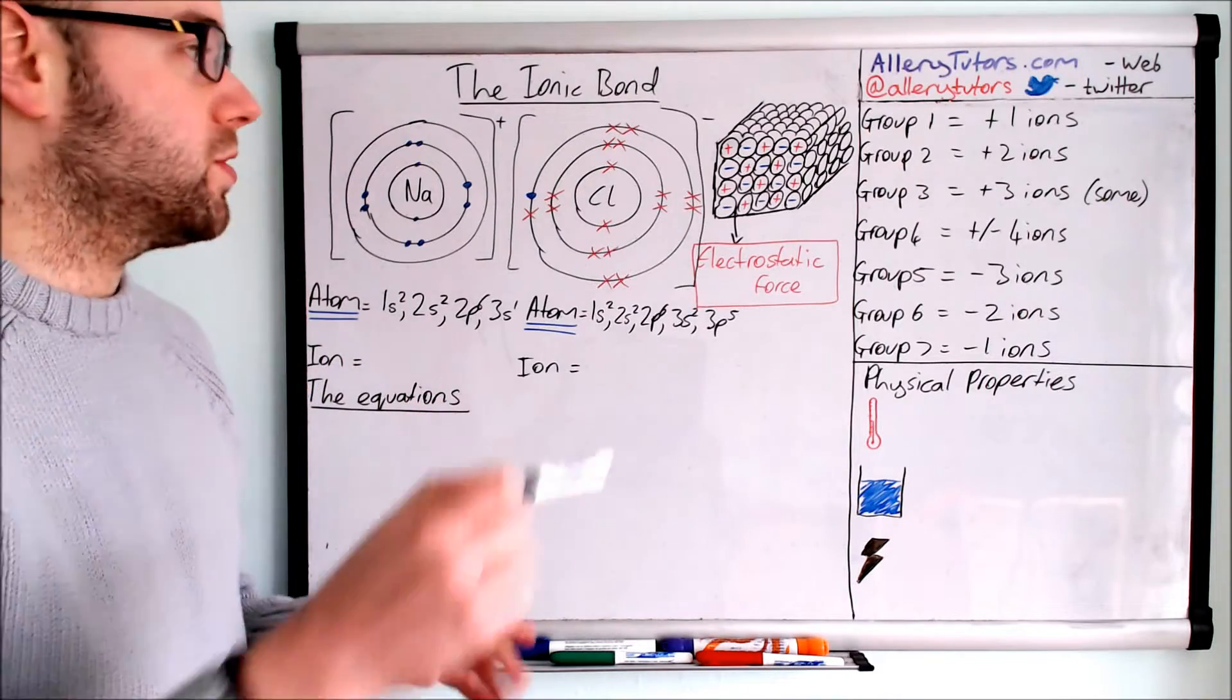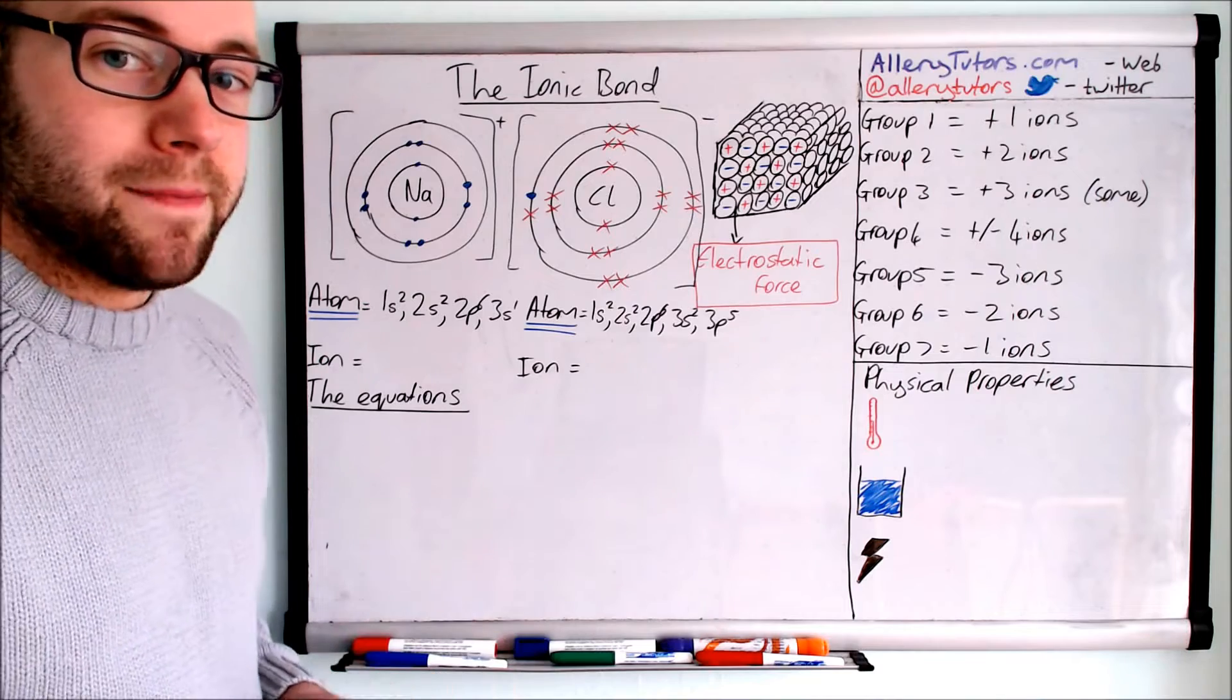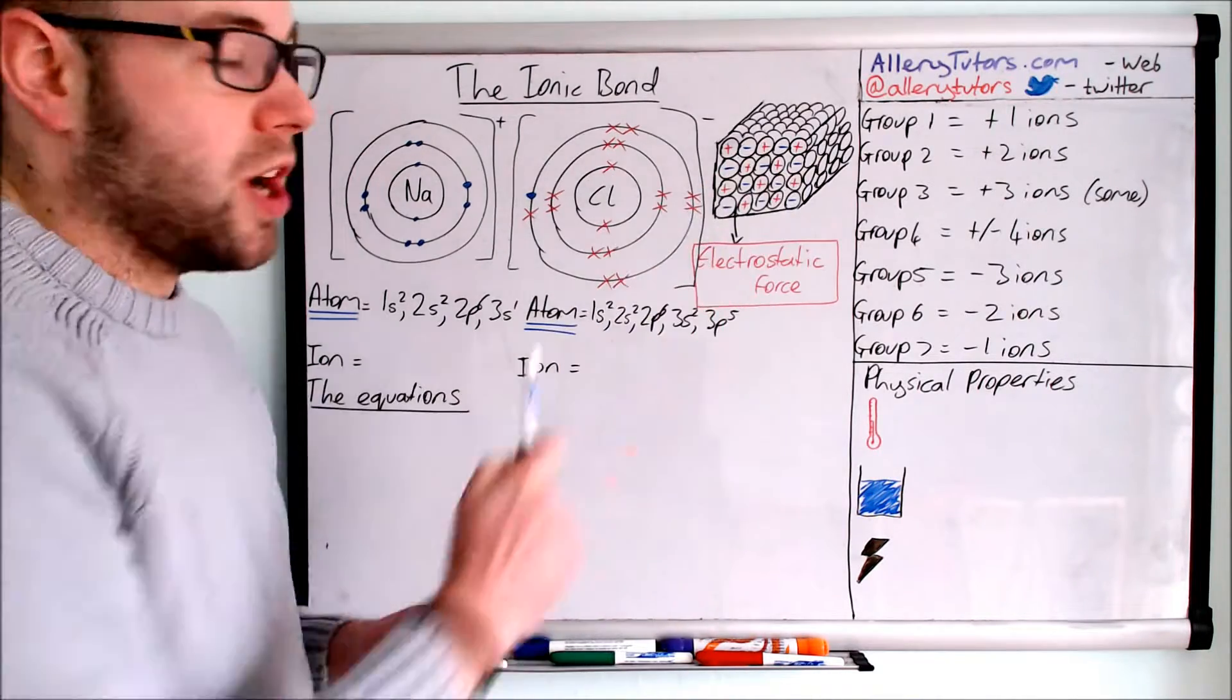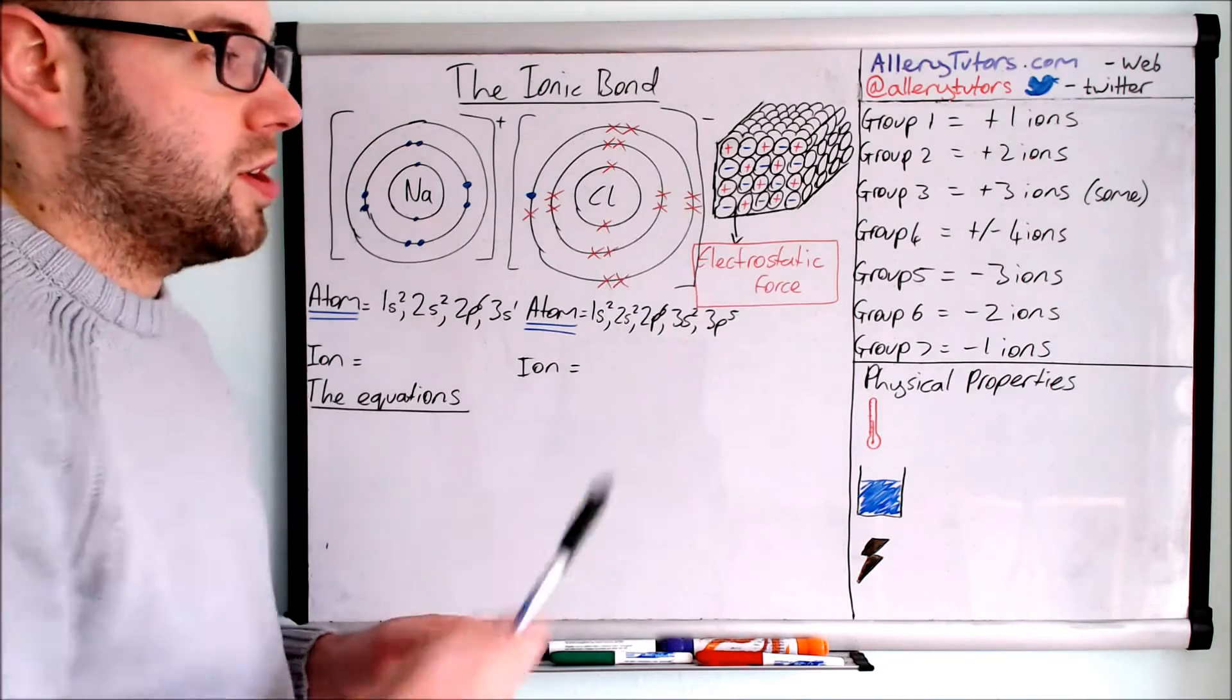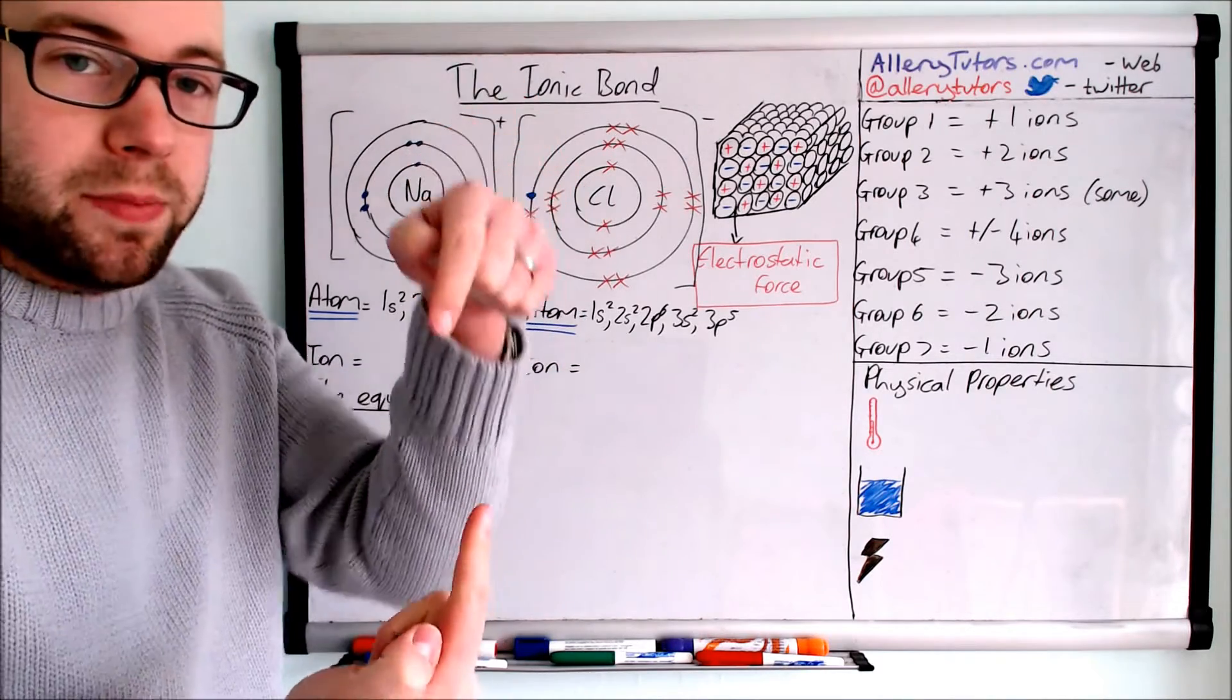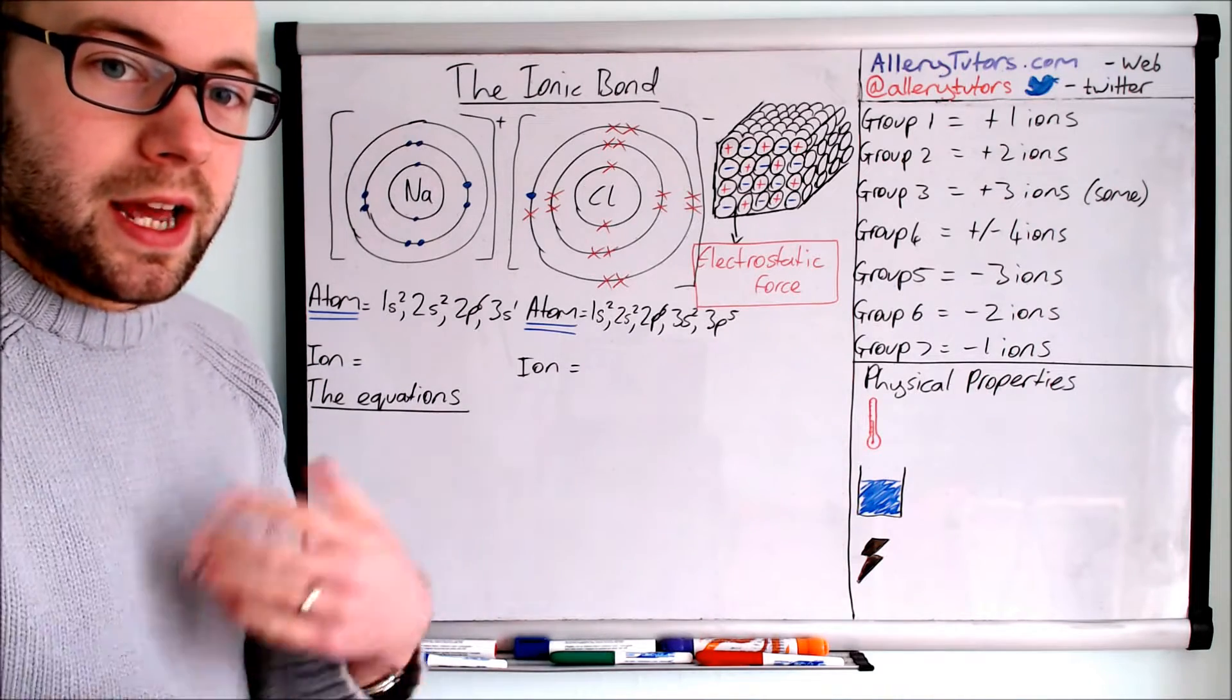Now the actual ionic bond is not the actual transfer of electrons. The bond is actually the attractive force of the ions that have been produced as a result of the transfer of electrons. So sodium is positively charged and chlorine is negatively charged. The words we're looking for in the exam is an electrostatic attraction between oppositely charged ions. These are the words that you need to use to describe an ionic bond. They form giant ionic structures like this, huge cubic structures where each oppositely charged ion can effectively surround themselves by six other oppositely charged ions. Very stable, lots of electrostatic forces.